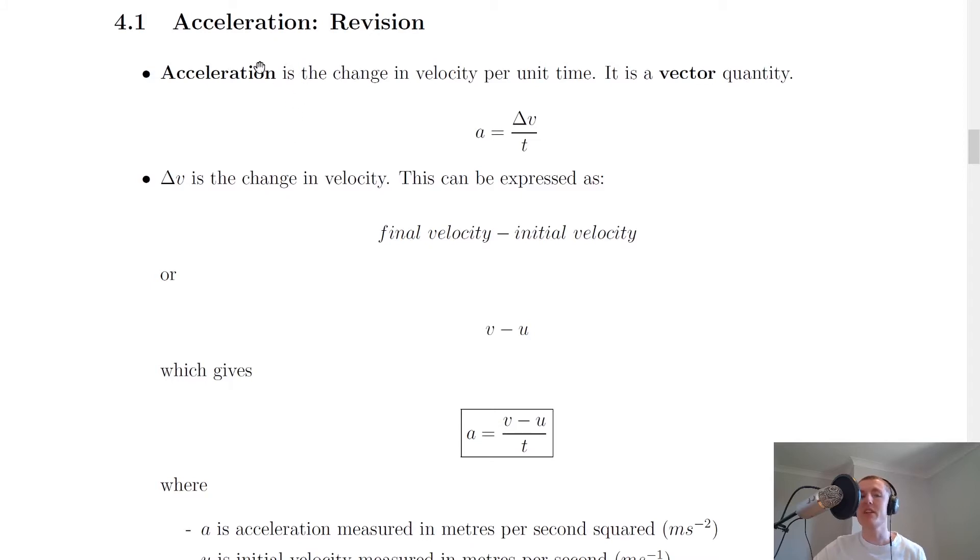The first thing to look at is the definition of acceleration, and it says here that acceleration is the change in velocity per unit time, or you can also say it as the change in velocity each second. It's a vector quantity, so remember that means that direction is important when we're talking about an object accelerating. So when we're stating an acceleration, it will have both a magnitude and a direction.